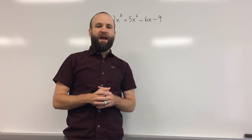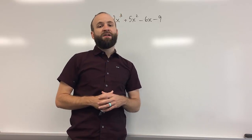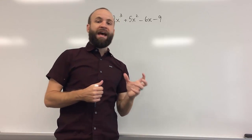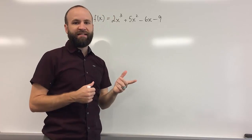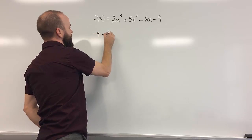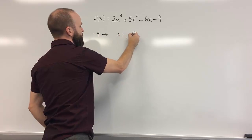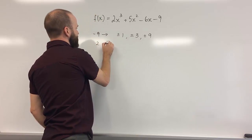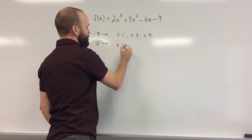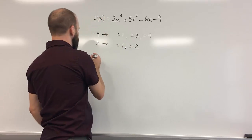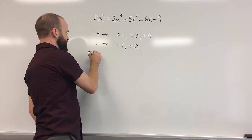For this polynomial, the rational zeros theorem tells us that we can make a list of possible rational zeros by looking at the factors of the constant term — in this case negative 9 — and the factors of the leading coefficient, which in this case is 2. The factors of negative 9 are ±1, ±3, and ±9. The factors of the leading coefficient 2 are ±1 and ±2. I'll call the possible rational zeros PRZ.